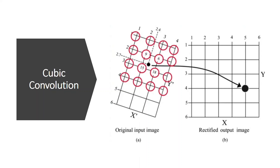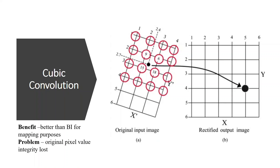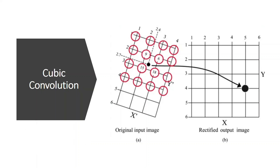Cubic convolution is similar to bilinear interpolation, but takes the closest 16 input cells based on distance and assigns the computed value to the rectified output image. The benefit is that it is better than bilinear interpolation for mapping purposes; the drawback is again that pixel value integrity is lost. This concludes the topic of geometric error and its correction mechanism. In the next video lecture, a new chapter on image enhancement will begin.